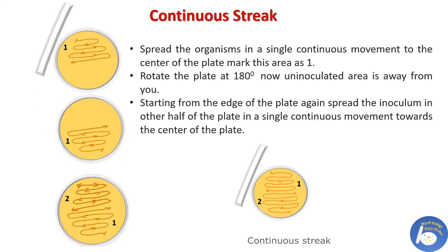Continuous streak plate method: Spread the organism in a single continuous movement to the center of the plate and mark this area as one. Rotate the plate 180 degrees so the uninoculated area is away from you. Starting from the edge of the plate again, spread the inoculum in the other half in a single continuous movement towards the center. Because the streaks are continuous, this method is known as the continuous streak plate method.